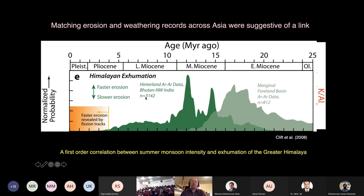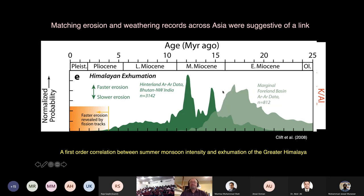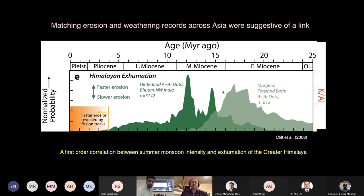This general pattern also supported the channel flow type models. These are argon-argon dates from the Greater Himalaya and the associated foreland basin — what you can see is an increase during the Early Miocene, peaks during the Mid-Miocene, and then a decrease. This suggests the Greater Himalayas were cooling very quickly in the Middle Miocene, at the same time that erosion was strong and monsoon rains were strong, implying the monsoon was critical in driving the exhumation of the Greater Himalayas, and that as the monsoon weakens in the Late Miocene, exhumation slows down.